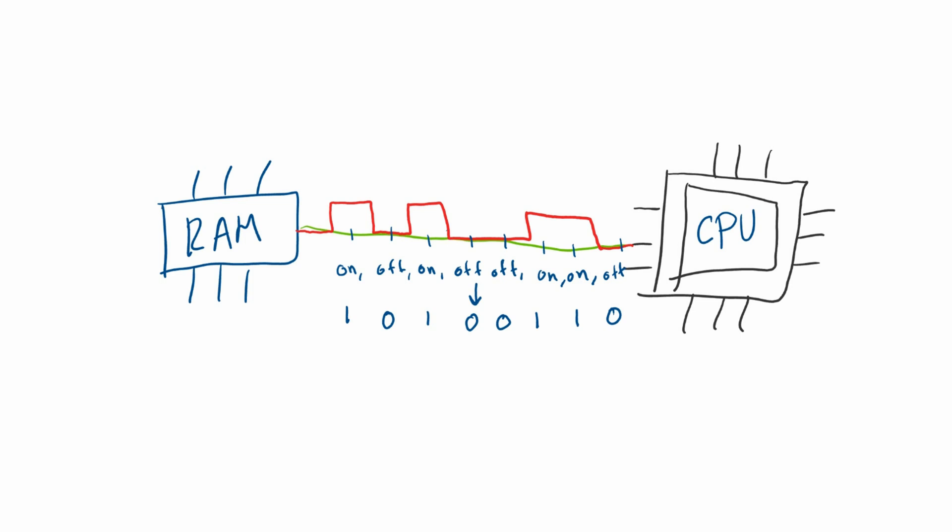Welcome. In the last video we talked about how data is represented inside of the computer, how the alternation of electrical current gets converted to bits which either have a value of zero or one. In this video we're going to be talking a little bit more about that, focusing more on the binary number system — how to convert numbers from the decimal number system to the binary number system and vice versa, and then we'll talk about the hexadecimal number system, which is another number system that it's good to be aware of when you are programming.